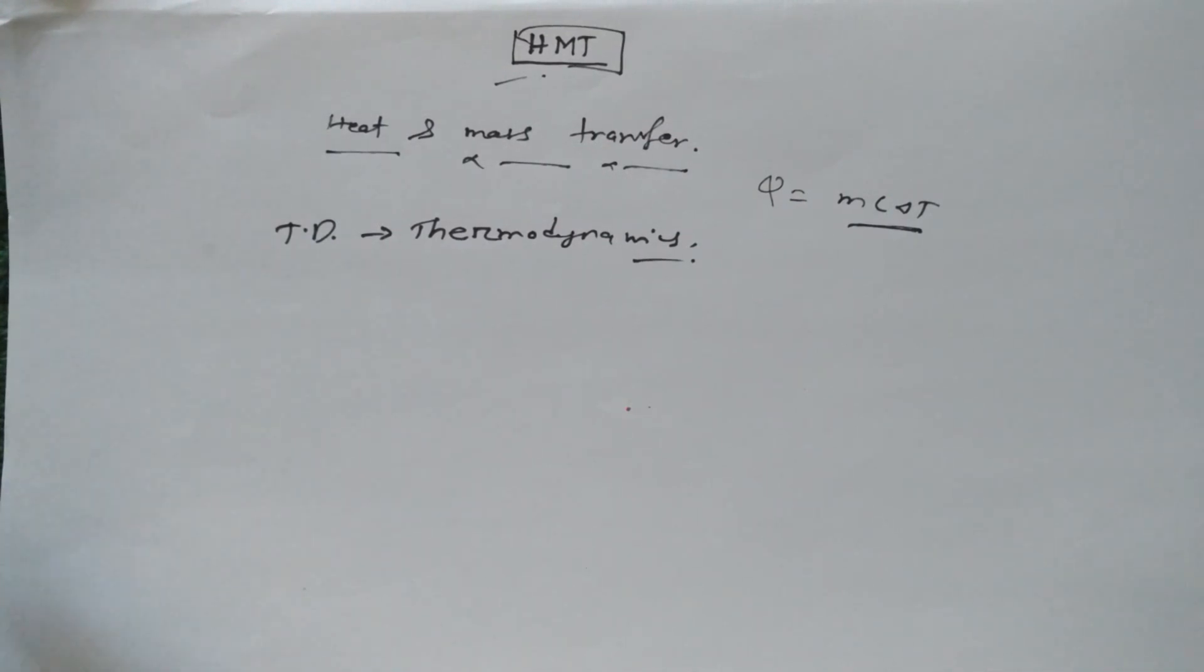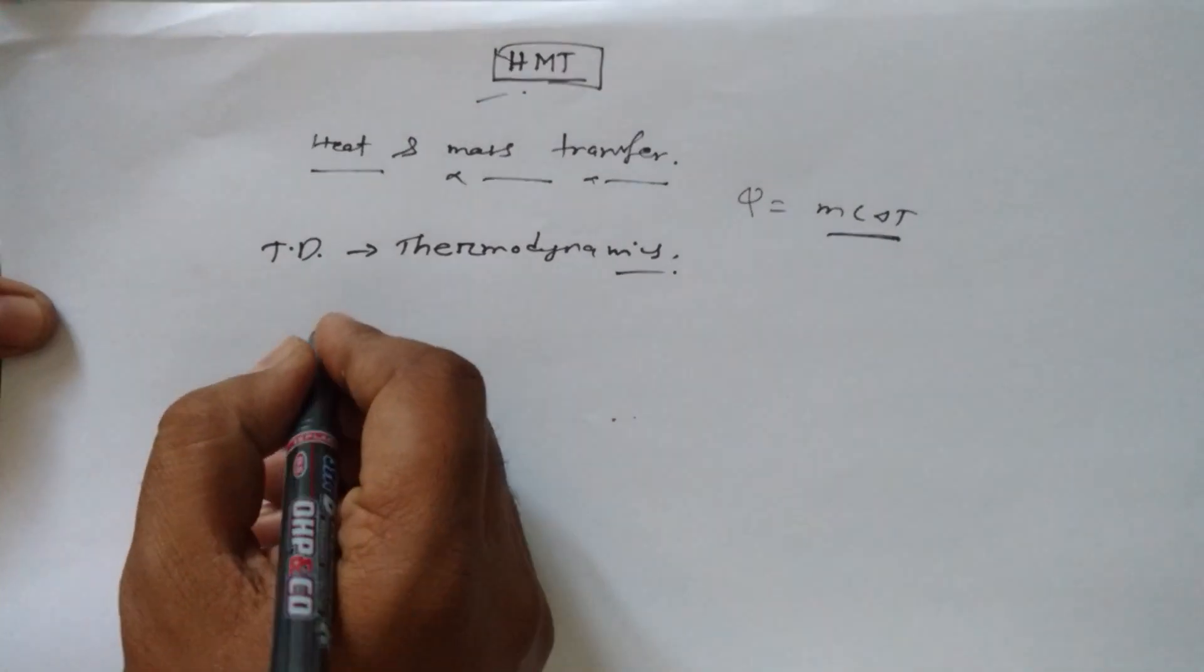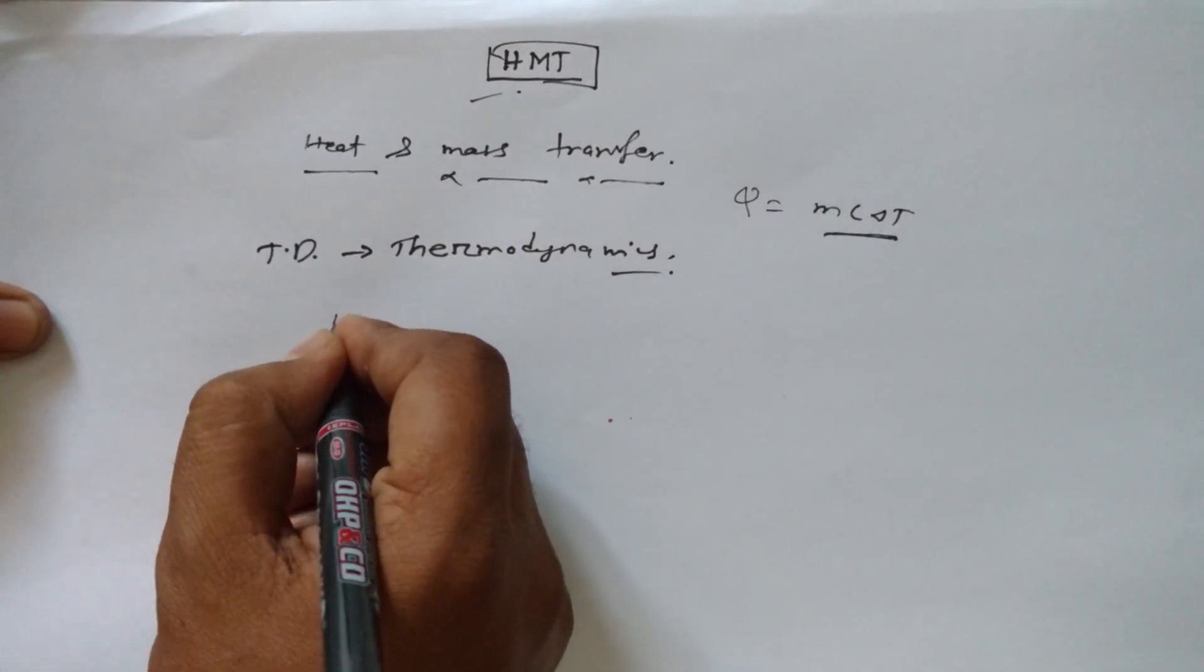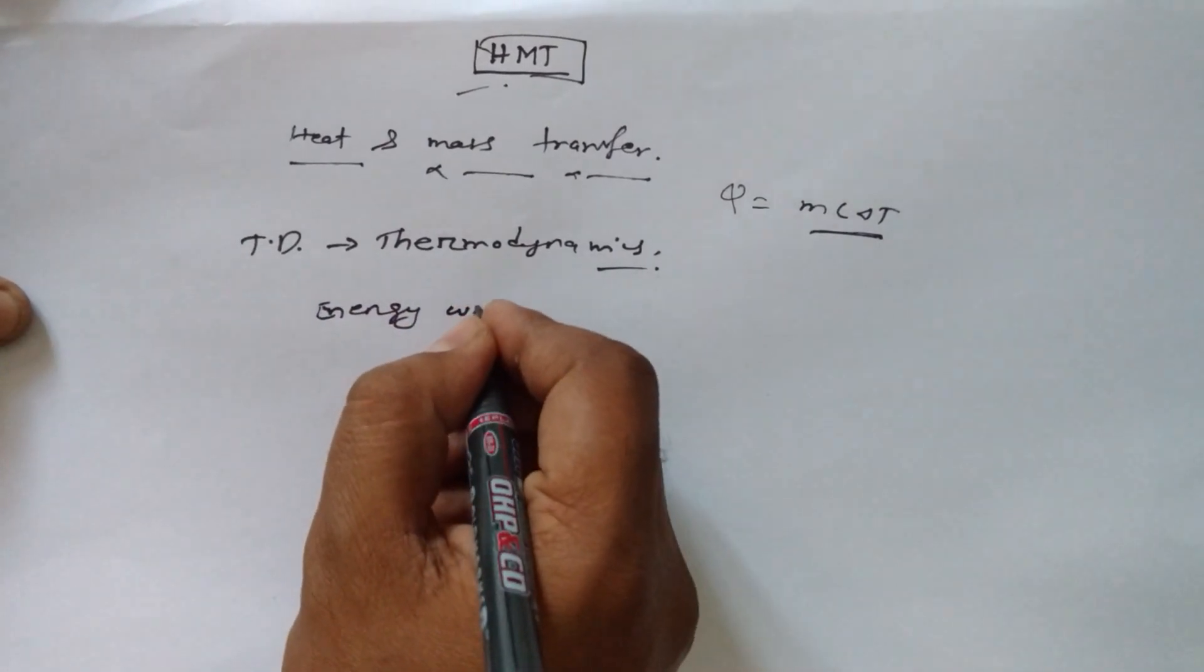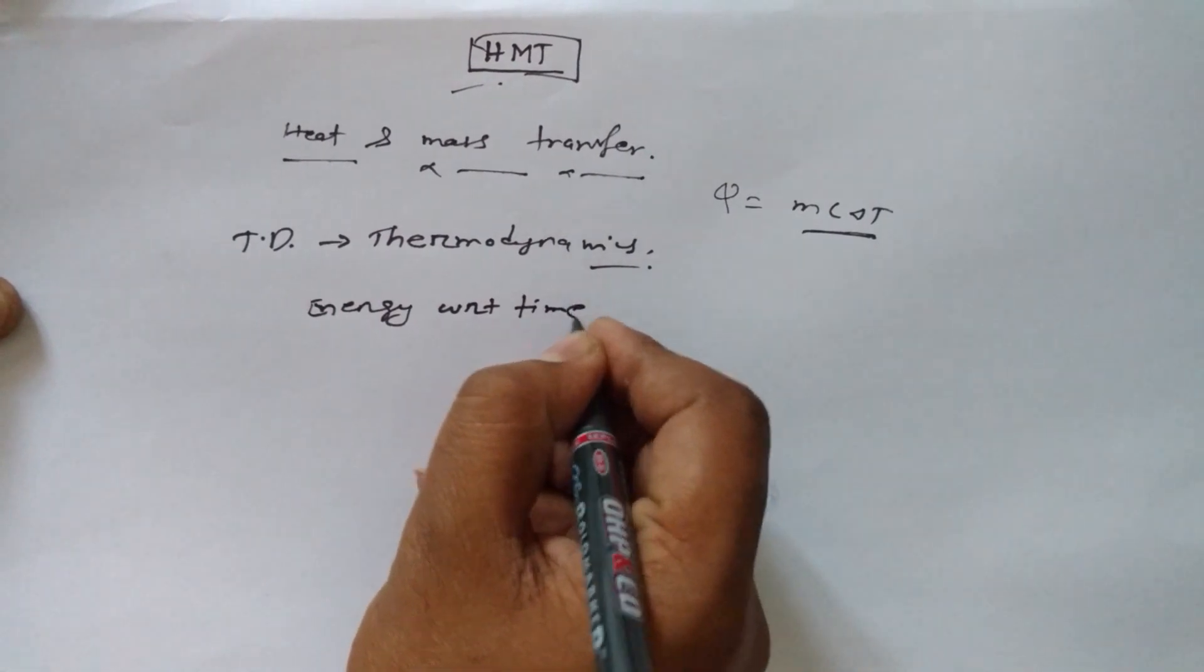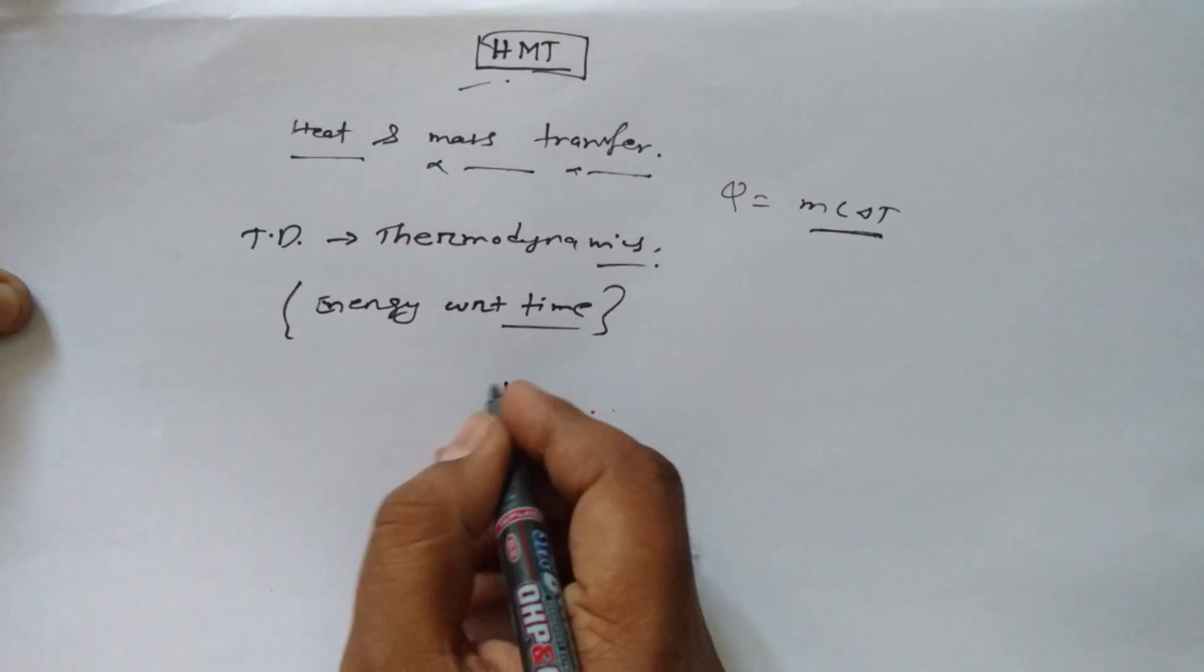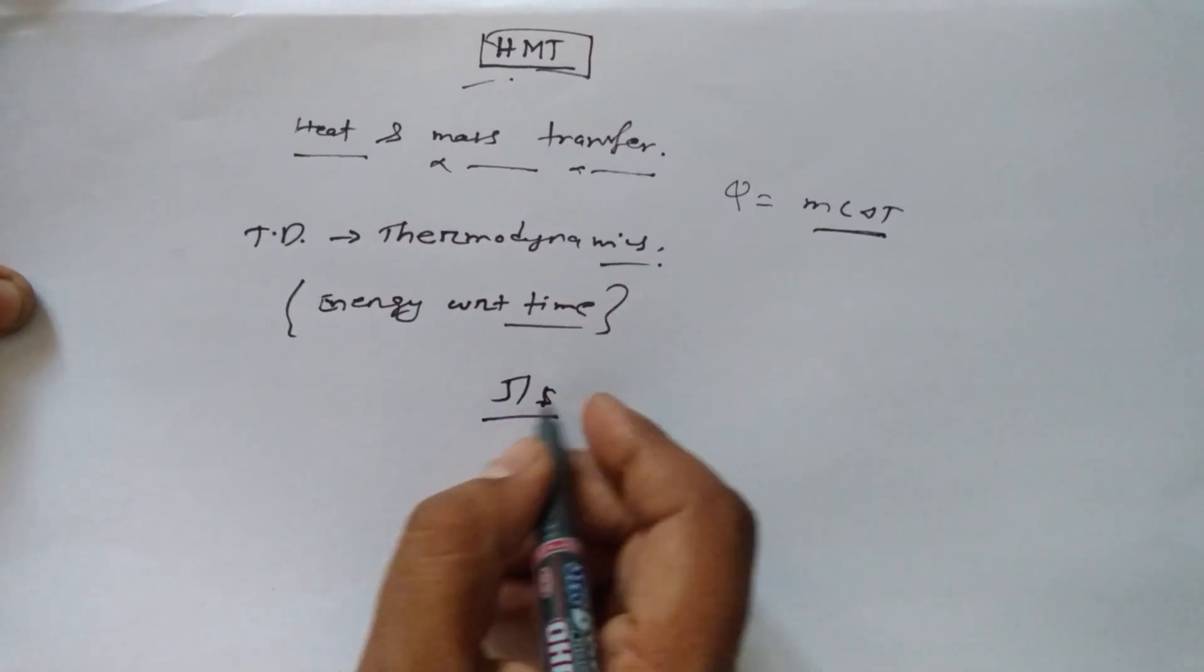In heat and mass transfer, we relate energy transfer or heat transfer with respect to time. That means all values will be in joules per second.